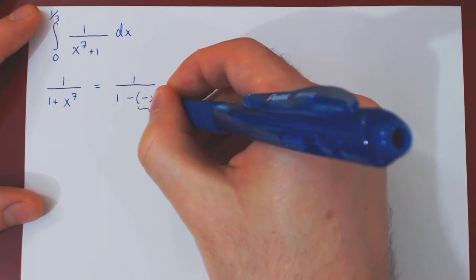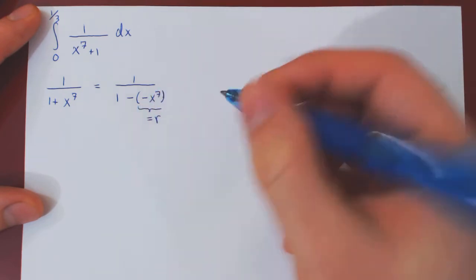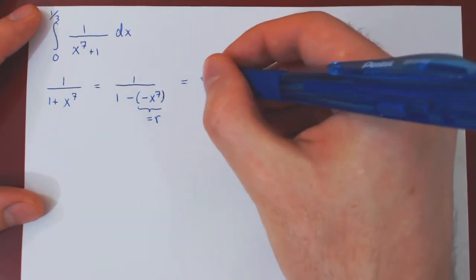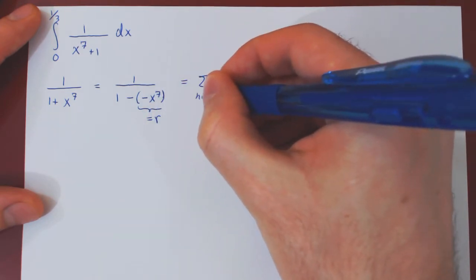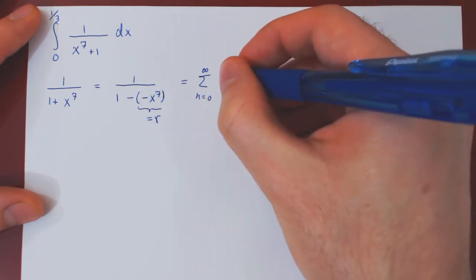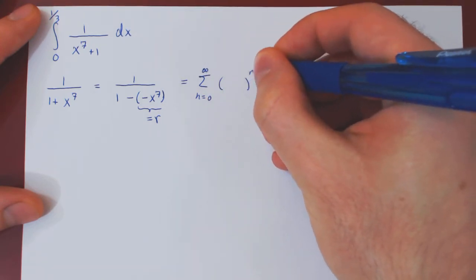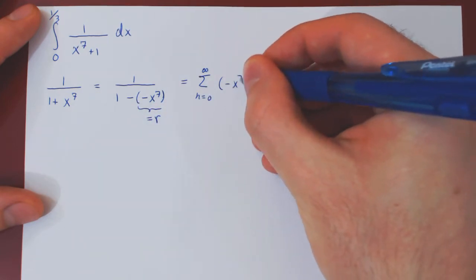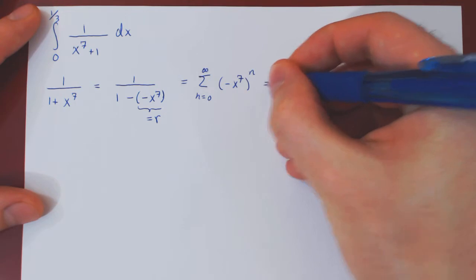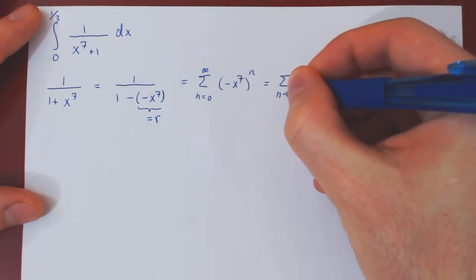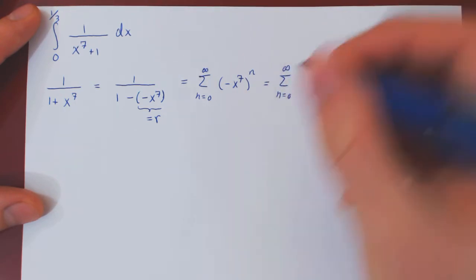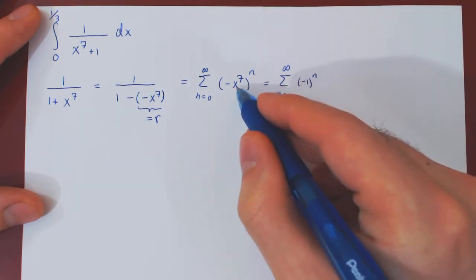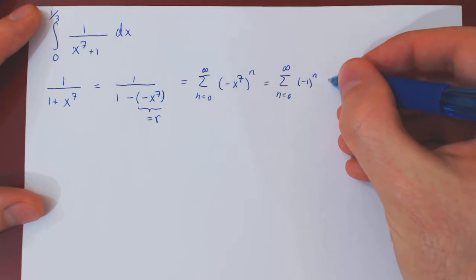This now becomes our r, thinking of a geometric series. 1 over 1 minus r equals the series from n = 0 to infinity summing rⁿ. But r happens to be negative x⁷, so we get (−1)ⁿ times x^(7n).